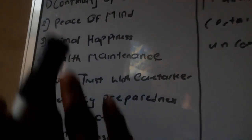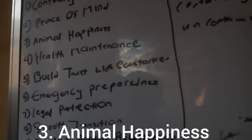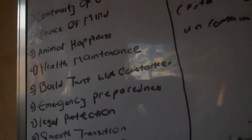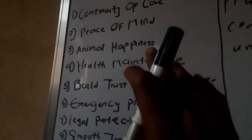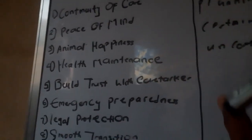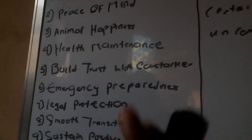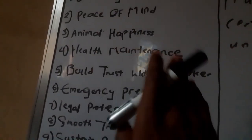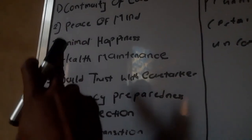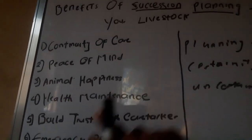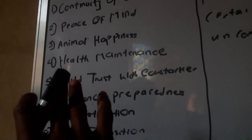Number three is animal happiness. Once your animals are free from disease and mortality, they will be happy — and that is when you see them jumping from one place to another, climbing on top of each other. That means they are happy, and with that you have animal happiness in your farm through succession planning.